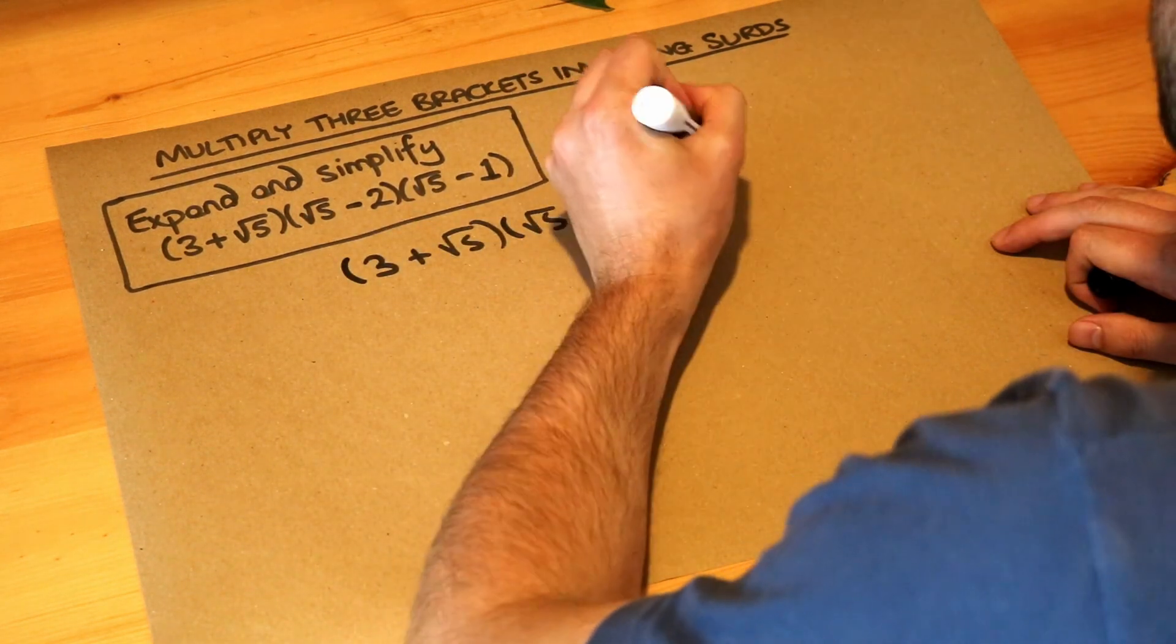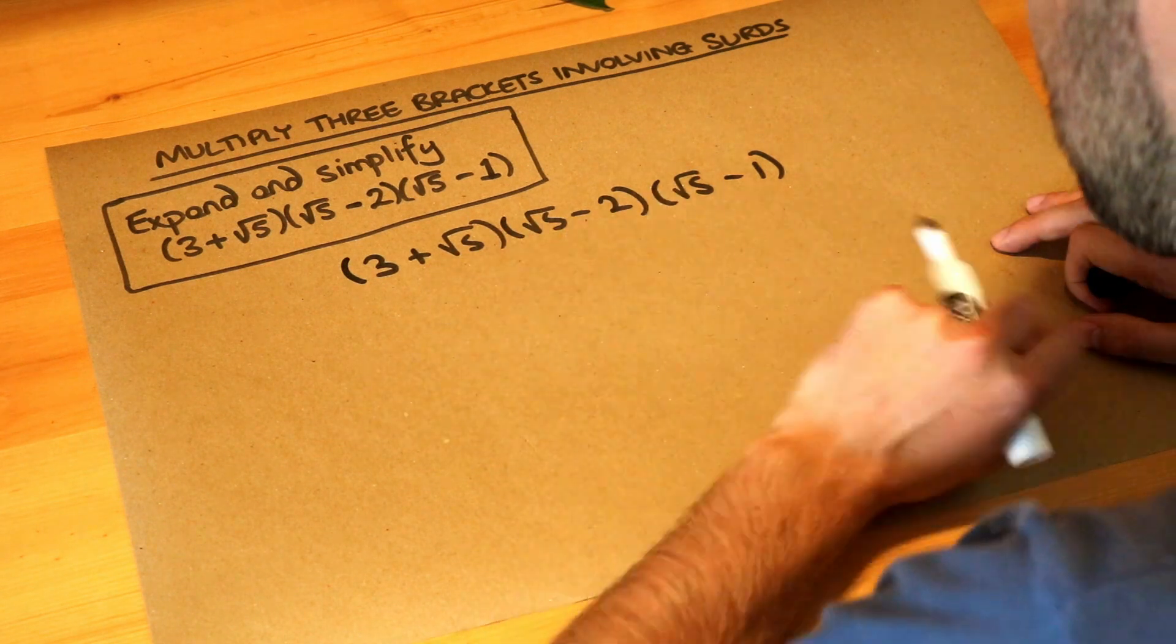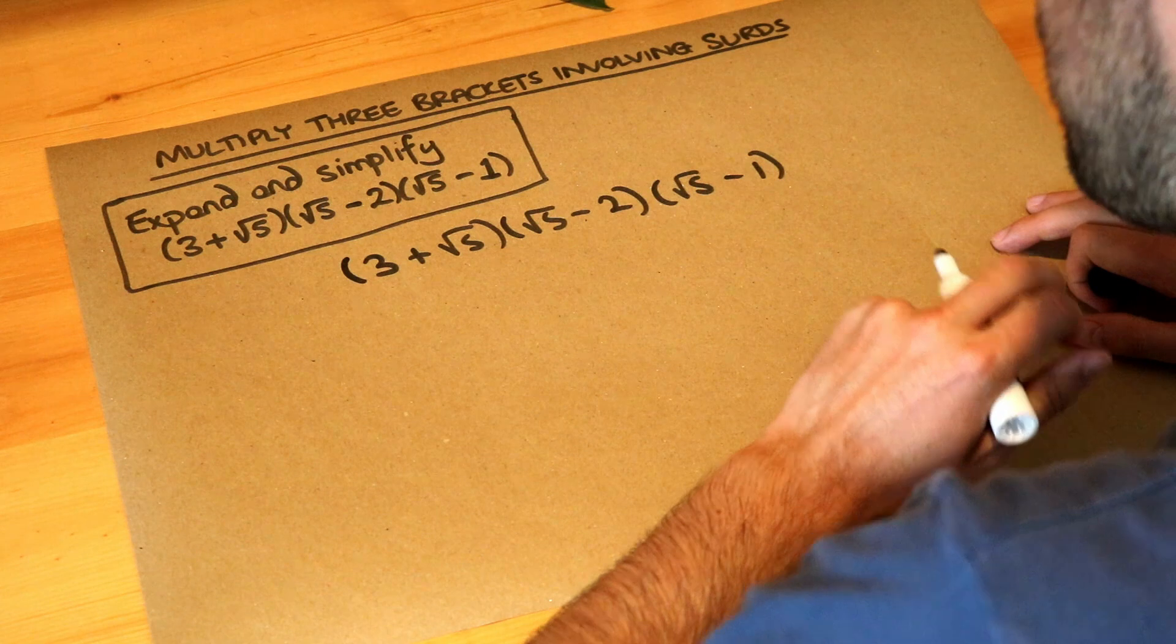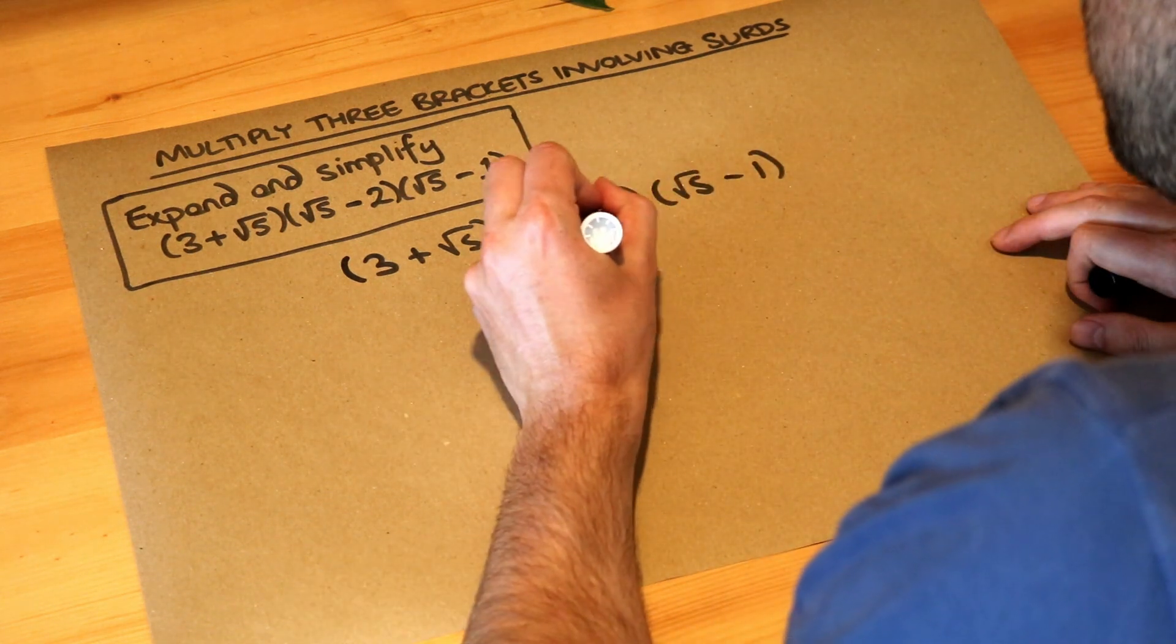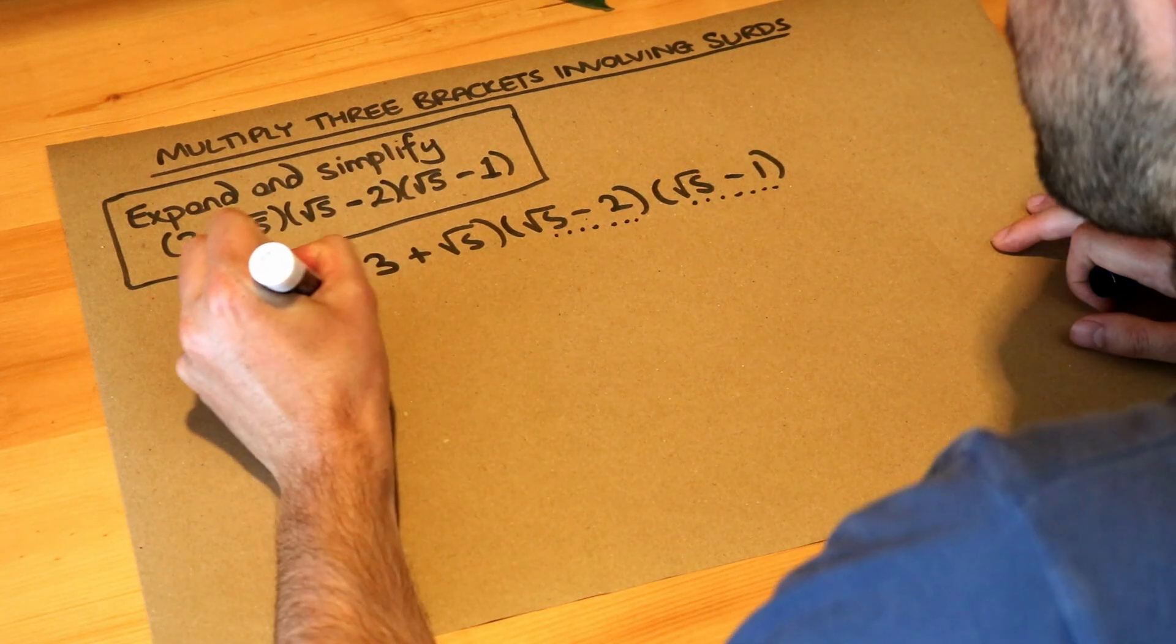When we expand three brackets, you have a choice. You can either do the first times the second bracket first, or the second times the third. You'll end up with the same answer either way. I'm going to choose to do the second bracket times the third.